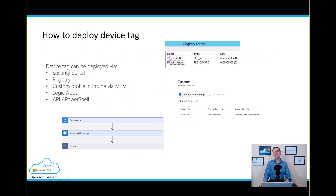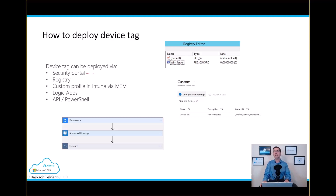There are multiple ways you can deploy device tags — I've tested and used all of them. The first one, using the security portal, is by far the easiest. Just go to the security portal, select the device, and add whatever tag you want. The only problem is you need to do that device by device.